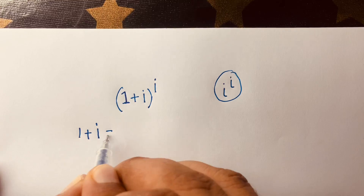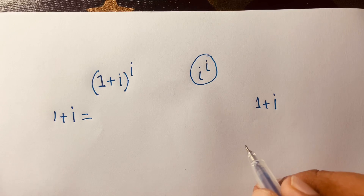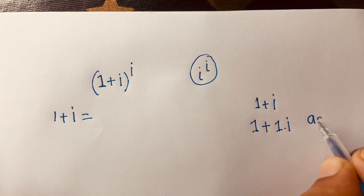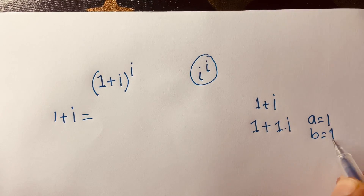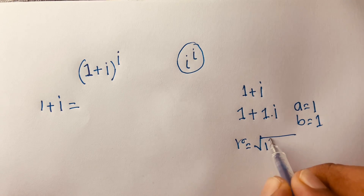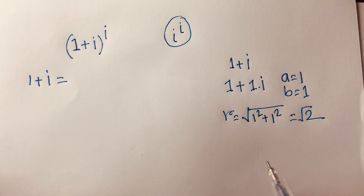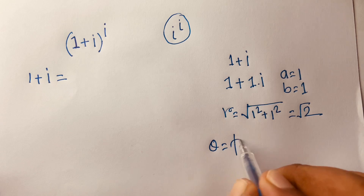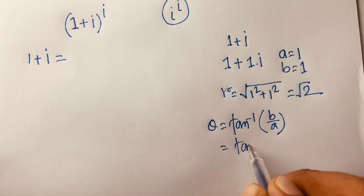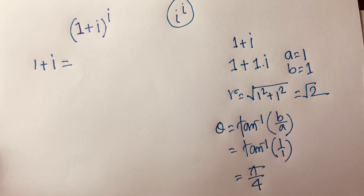First, consider 1+i. We can write it as a+bi where a=1 and b=1. Then r is equal to the square root of 1² plus 1², which gives us √2. And θ = arctan(b/a) = arctan(1/1) = π/4.